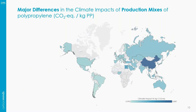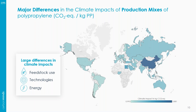First, let's look at the production mix of polypropylene. We see that less than a third of countries produce propylene themselves, while other countries cover their supply through trade. China has by far the largest climate impact — a factor of four larger than the smallest. Since the production mix only takes into account national production and not trade activities, the high impact of China must be related to differences in feedstock, technology used, and energy supply.